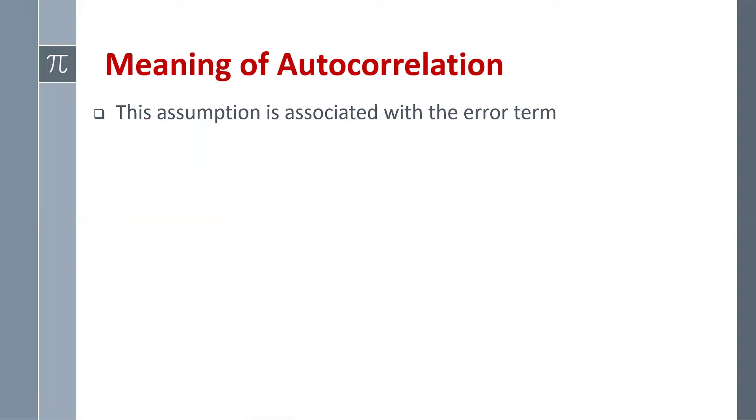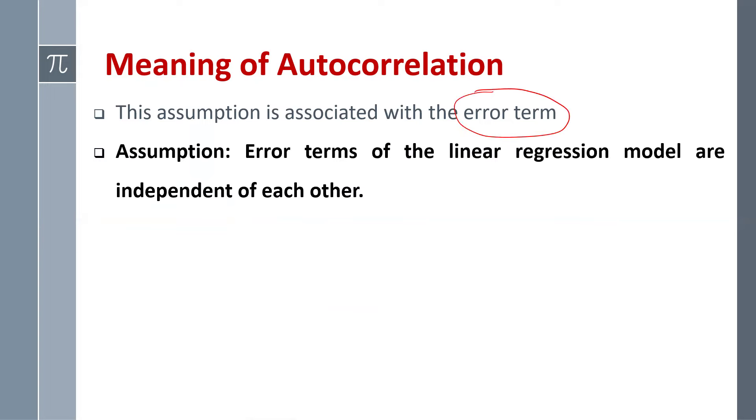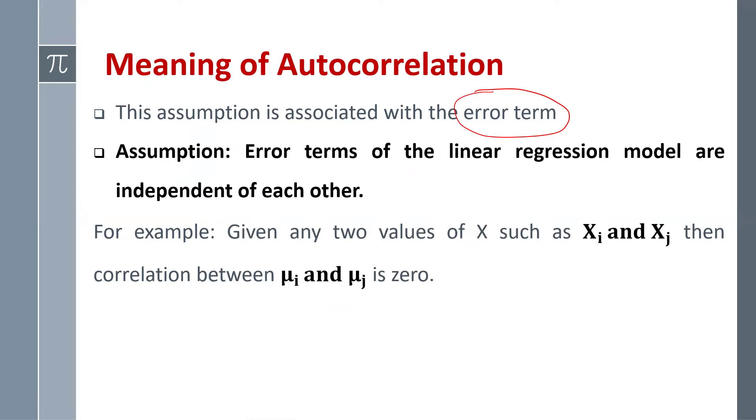So what do we mean by autocorrelation? This assumption is associated with the error term. The assumption says that error terms of the linear regression model are independent of each other, they are uncorrelated. So suppose for any two values of x, such as xi and xj, then correlation between mui and muj is zero.